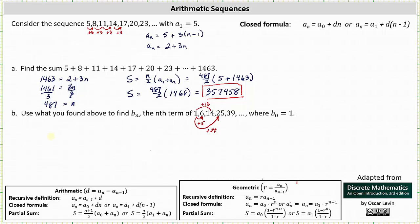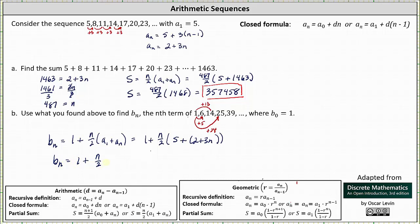This means the closed formula for b sub n equals b sub 0, which is 1, plus the partial sums from the arithmetic sequence above. That partial sum is n divided by 2 times the quantity a sub 1 plus a sub n, so b sub n equals 1 plus n divided by 2 times the quantity 5 plus 2 plus 3n. Simplifying, b sub n equals 1 plus n divided by 2 times the quantity 7 plus 3n.